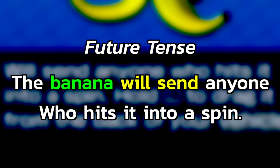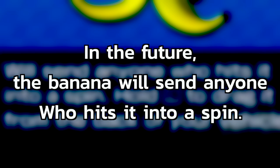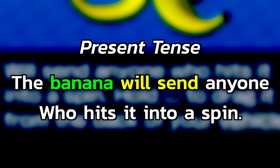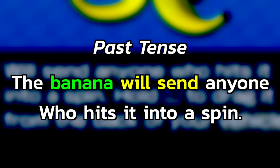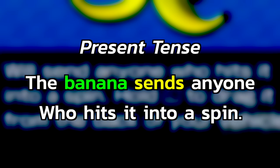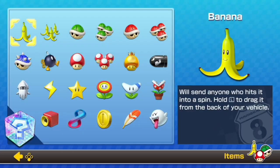In the future, the banana will send someone who hits it into a spin — the banana has not spun out anyone yet, but when you use it, it just might. The other two tenses are past and present. In past tense the sentence reads: 'The banana has sent anyone who hit it into a spin.' In present tense: 'The banana sends anyone who hits it into a spin.' Now let's practice this on another item — say, the Spiny Shell.